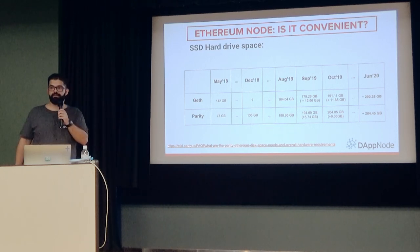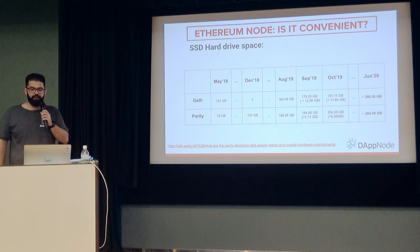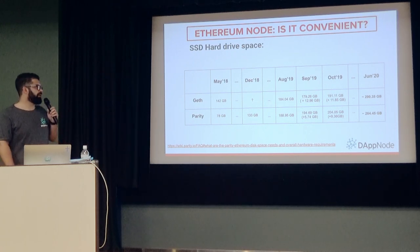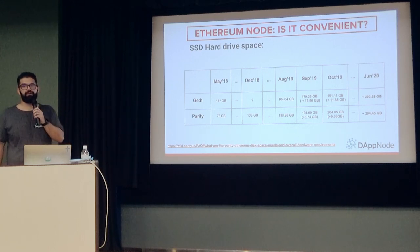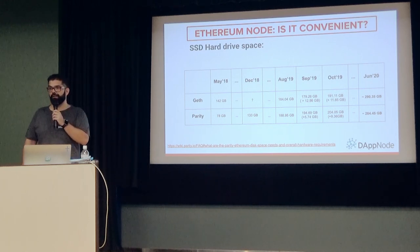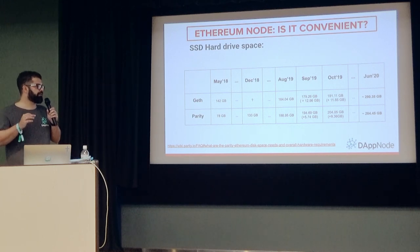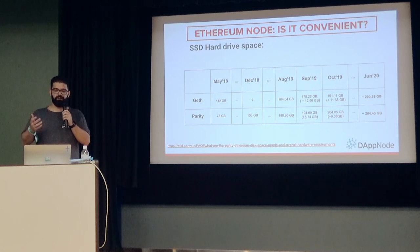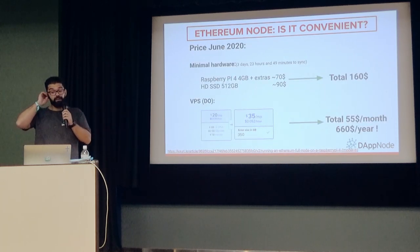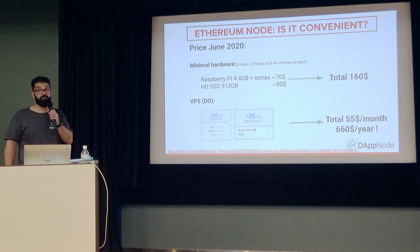The growth rate is around 7 or 8 GB every month. In June of next year, the size of the chain is going to be around 270 GB. That's important because we are going to a new tier of hard drives. Right now we can fit a full node in less than 250 GB, but in January or June next year it's going to be impossible. So let's look at what it will cost to maintain a full node in June next year.